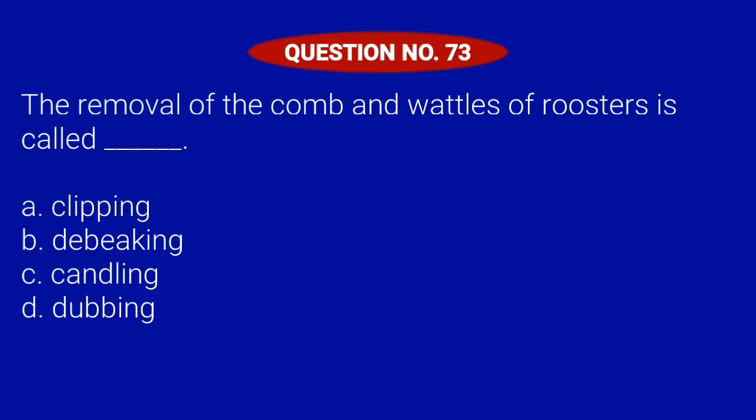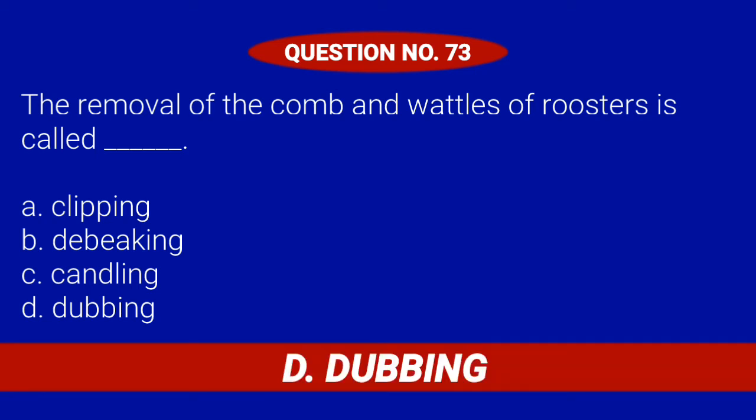Question number 73. The removal of the comb and wattles of roosters is called blank. Letter A: Clipping. Letter B: Debeaking. Letter C: Candling. Or Letter D: Dubbing. Correct answer is Letter D: Dubbing.